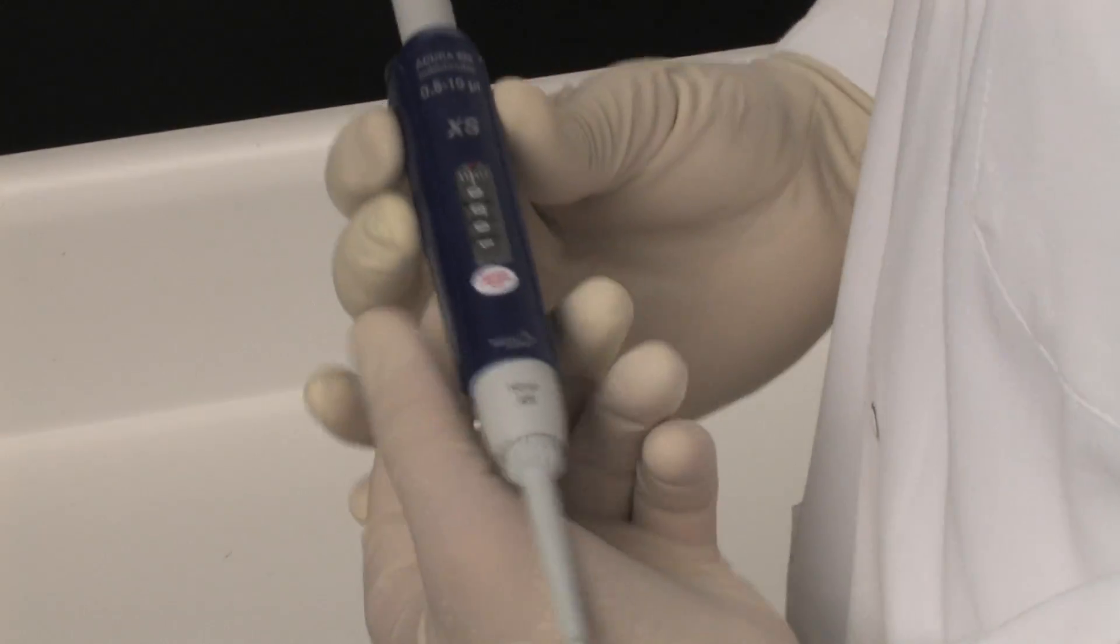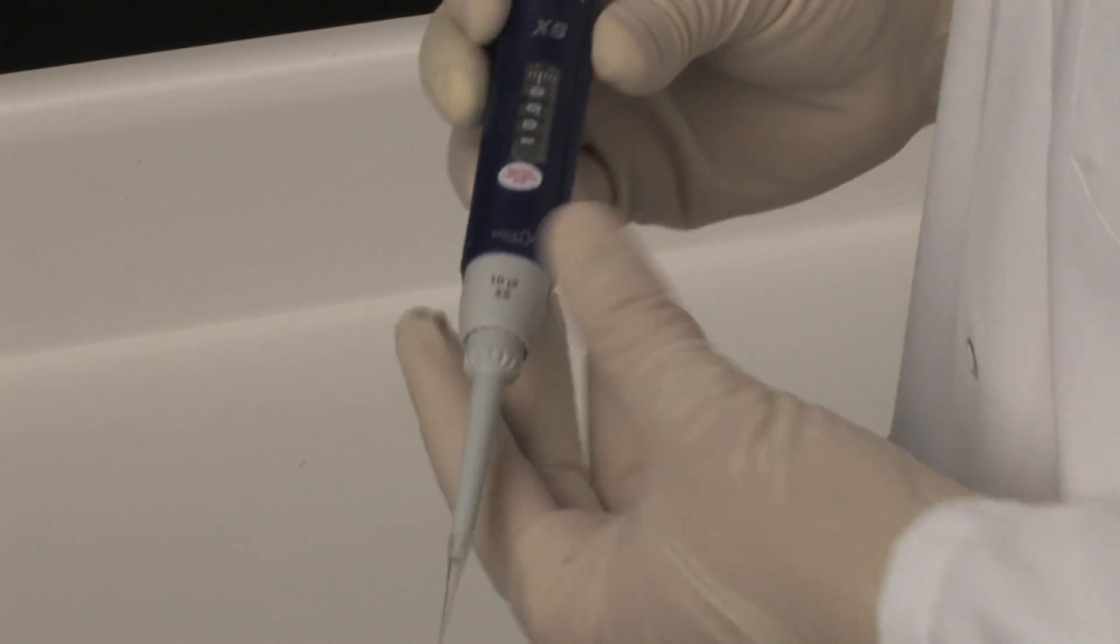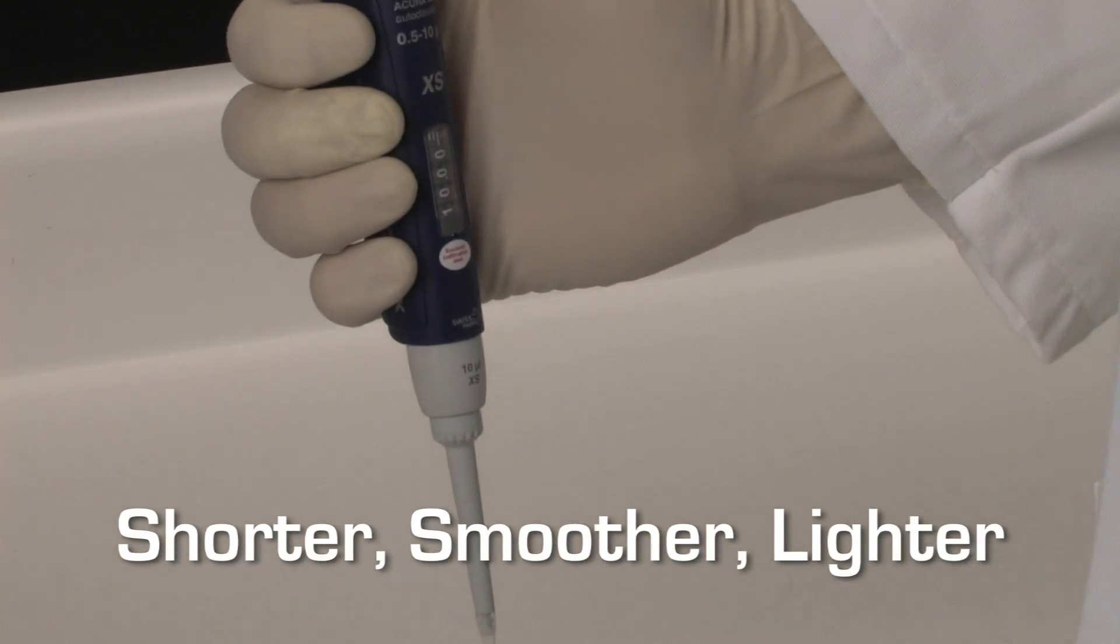including precise setting and checking volumes, as well as user-friendly tip adjustment to accommodate a variety of tips, the 826XS is shorter, smoother, and lighter.